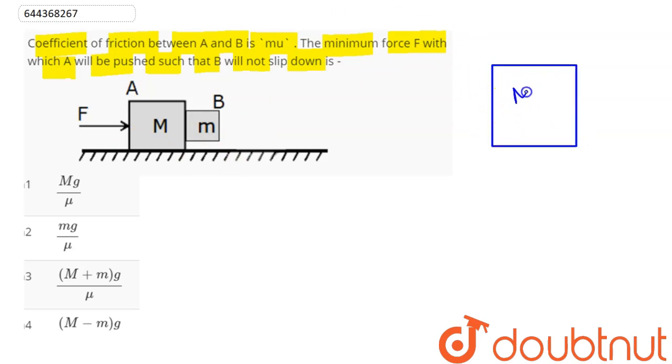Now here we can say this will accelerate to the right. So the system experiences force F to the right. Hence, pseudo force on this system acts towards the left, that is (M + m) into a.